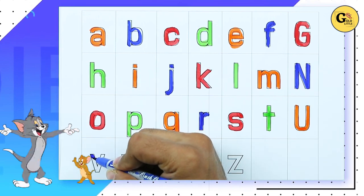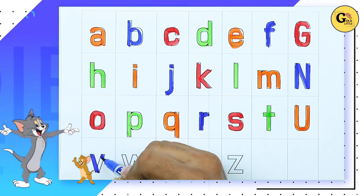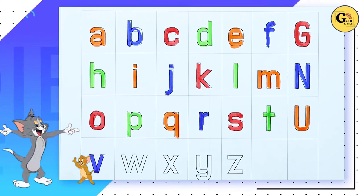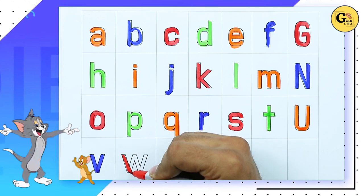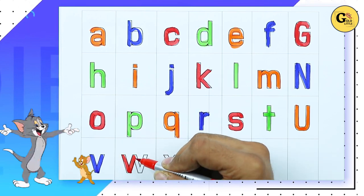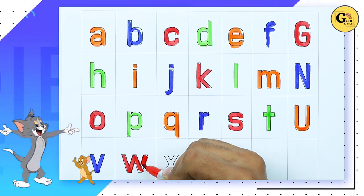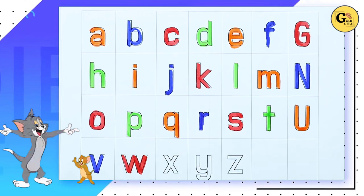V. V for violin. It's V. W. Capital small W. With red color. W for watch.